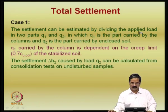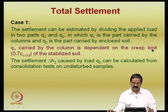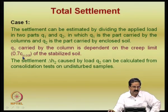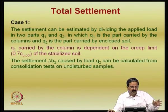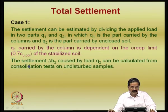Total settlement can be estimated by dividing the applied load into two parts, Q1 and Q2, where Q1 is carried by the columns and Q2 is carried by the enclosed soil. Q1 depends on the CUL — the undrained shear strength limit — of the stabilized soil. For example, if the treated material has 100 kPa strength, then 100 × 0.7 = 70 kPa would be the load limit. The settlement due to Q2 can be calculated from consolidation test results on undisturbed samples.